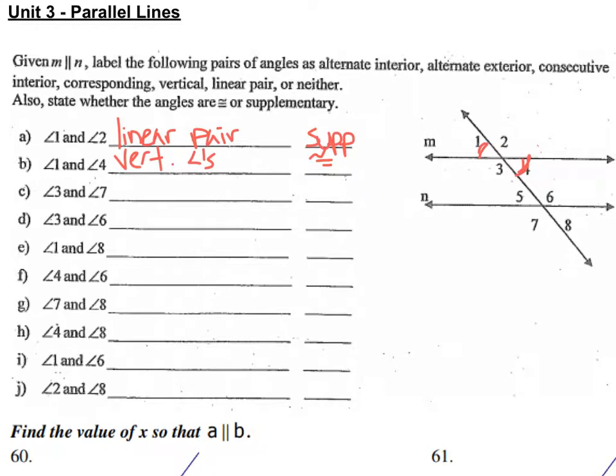The next one we look at is angle 3 and angle 7. These we call corresponding angles, and corresponding angles are congruent.